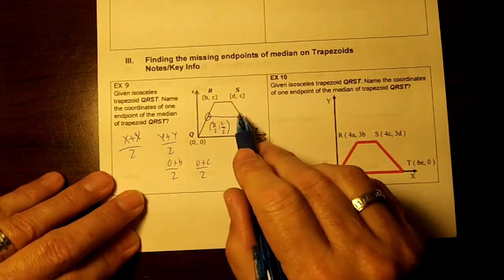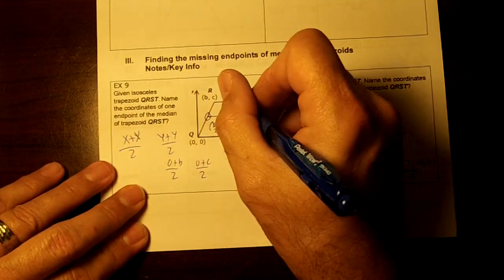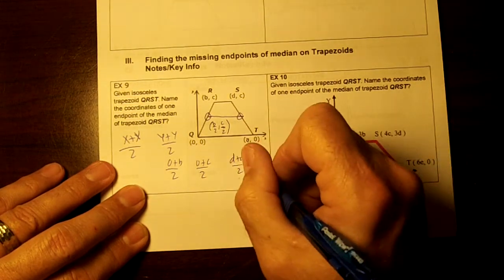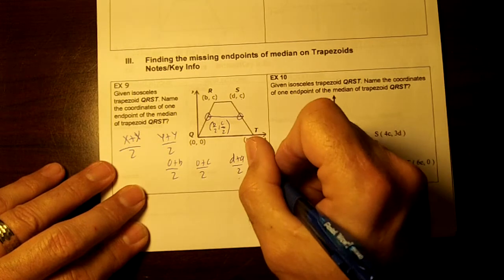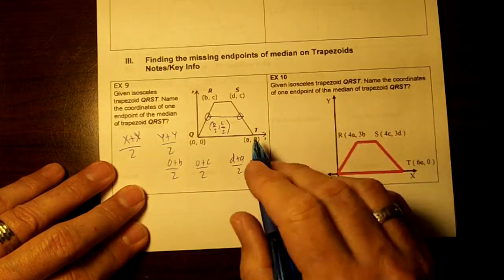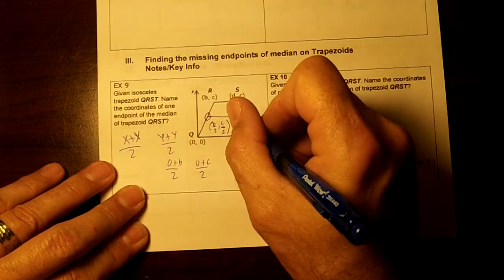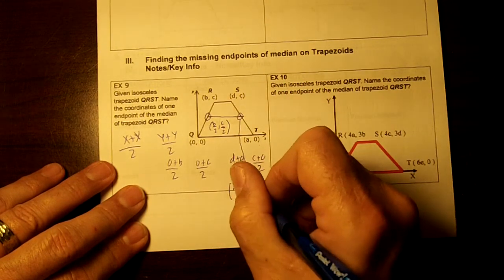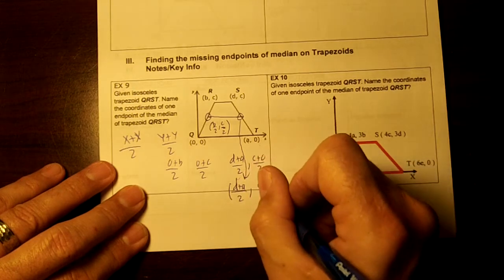Okay, now then let's find the midpoint for this one. We're going to do d plus a divided by 2. That doesn't simplify, does it? Comma c plus 0 divided by 2. So this ordered pair right here would end up being d plus a divided by 2 comma c over 2.